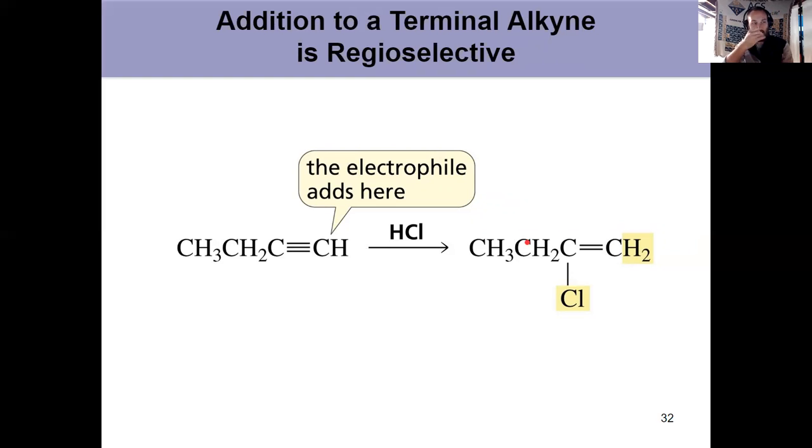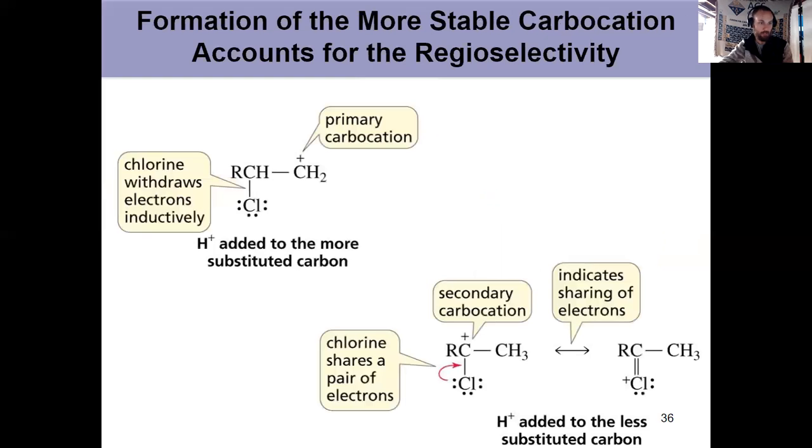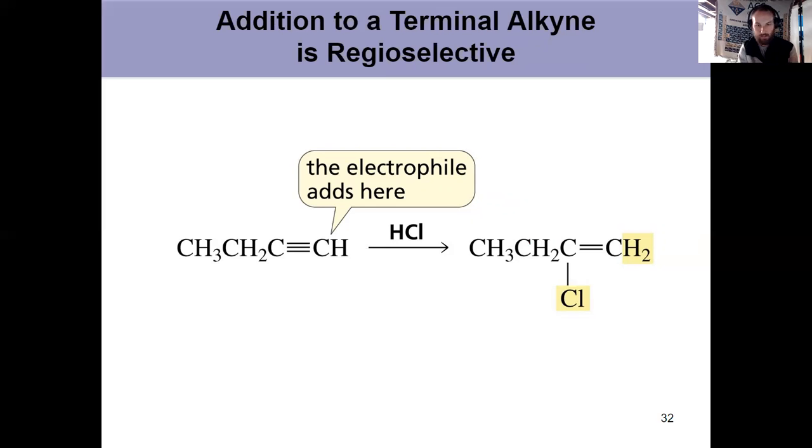Notice that if it's an internal alkyne, they have the same degree of substitution. It can't be regioselective because they have the same degree of substitution. But if it's a terminal alkyne and only if it's a terminal alkyne, then it's regioselective. This carbon has more hydrogens, so it gets the electrophile, which is hydrogen in this case. So it gets the H and the Cl goes there.